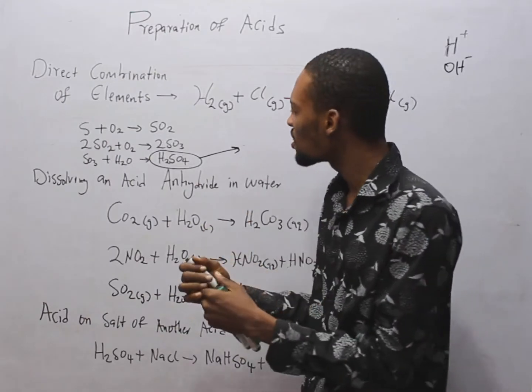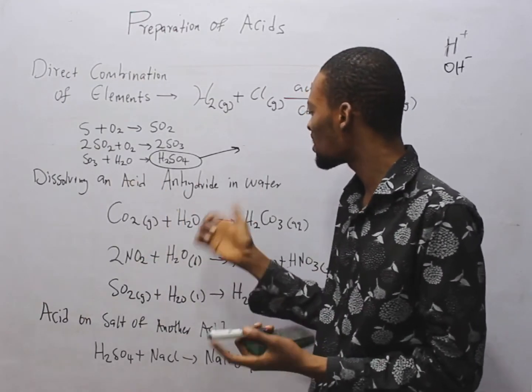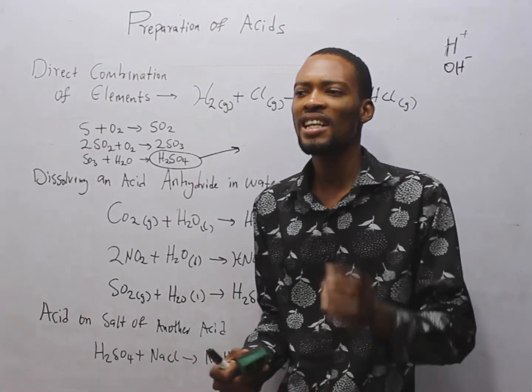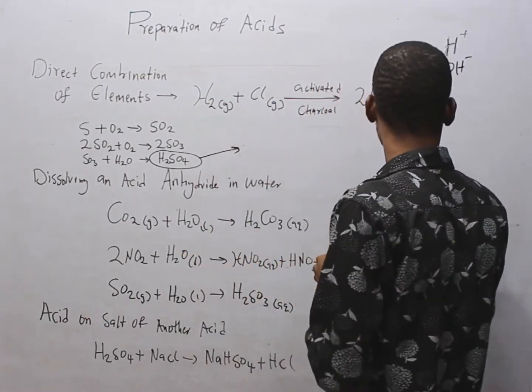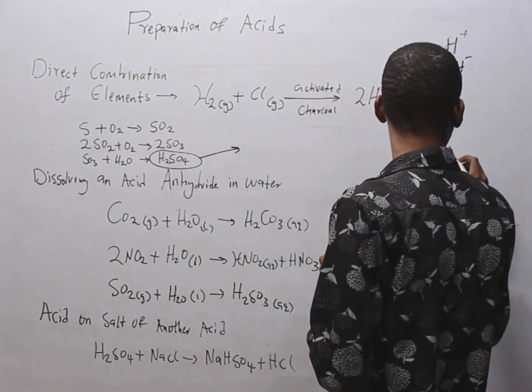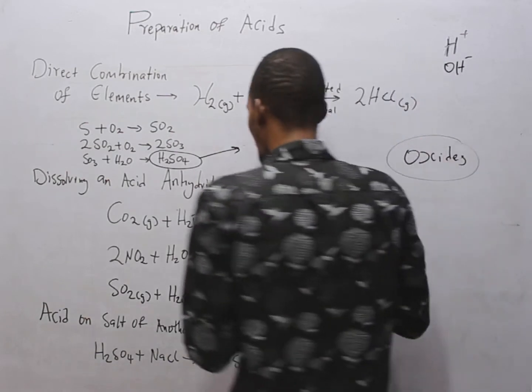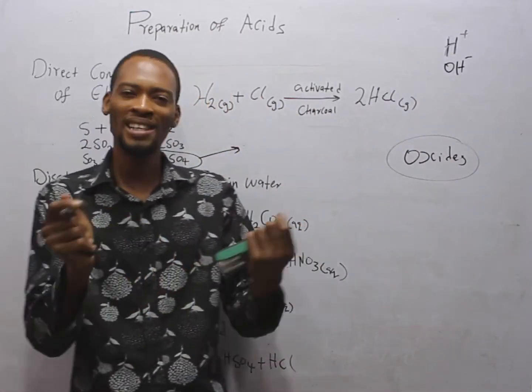Acids can also be formed by dissolving acid anhydride in water. What are acid anhydrides? These are simply oxides that, when dissolved in water, form acid.